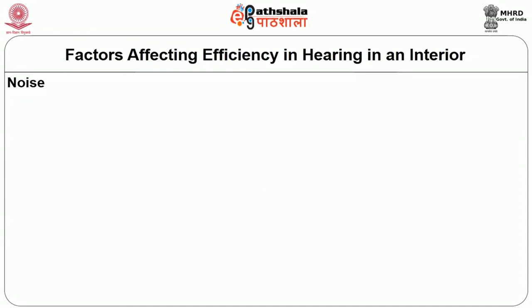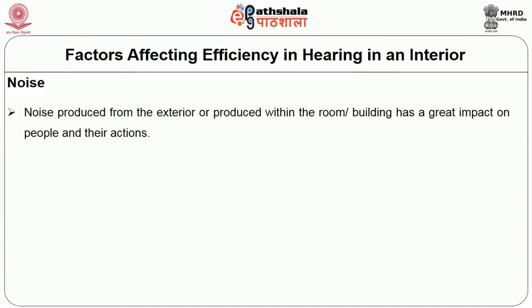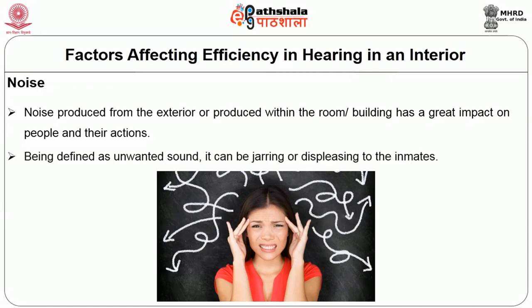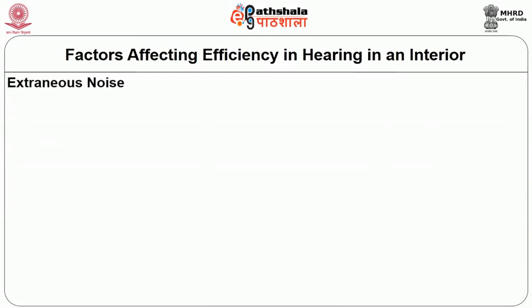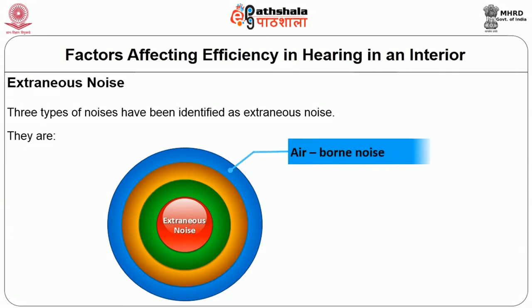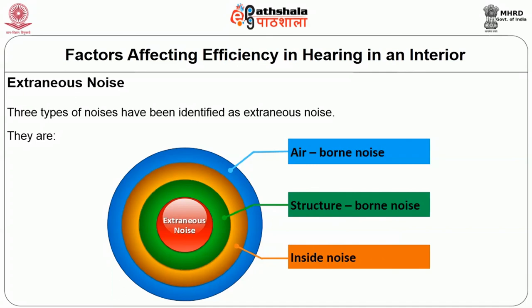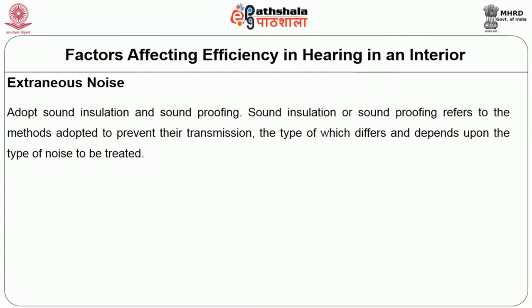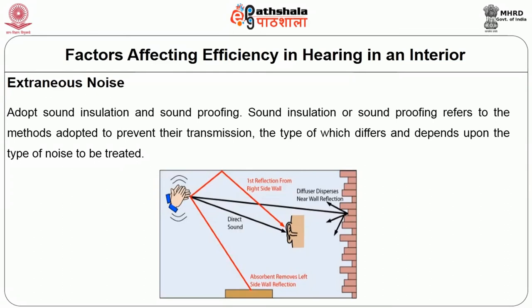The fifth aspect is noise — the most important one to be avoided. Noise produced from the exterior or within the room or building has a great impact on people and their actions. Being defined as unwanted sound, it can be jarring or displeasing to the inmates. Three types of noises have been identified as extraneous noise: air-borne noise, structure-borne noise, and inside noise. Extraneous noise has been identified and proved to be troublesome for listeners and must be controlled in interiors. The solution is to adopt sound insulation and sound proofing — methods adopted to prevent their transmission, the type of which differs and depends upon the type of noise to be treated.